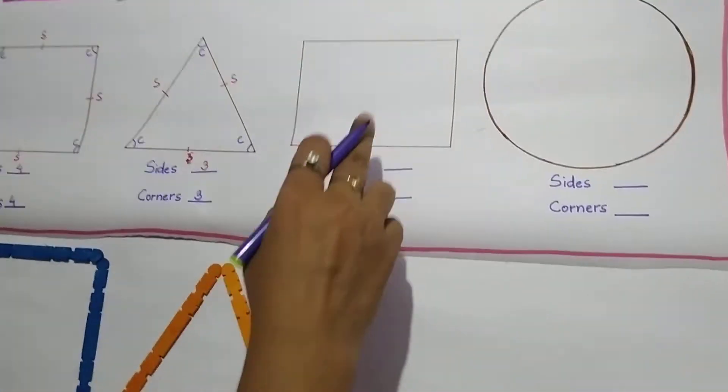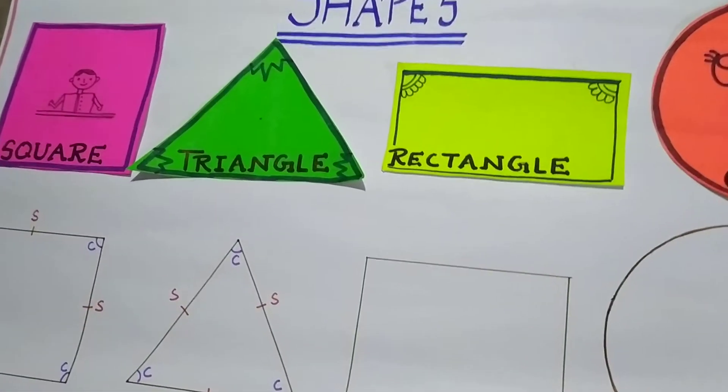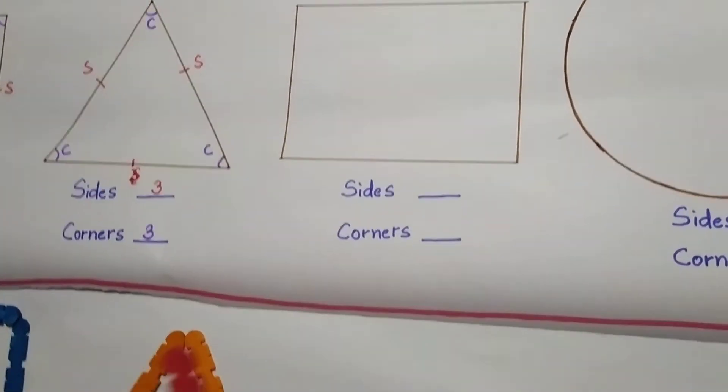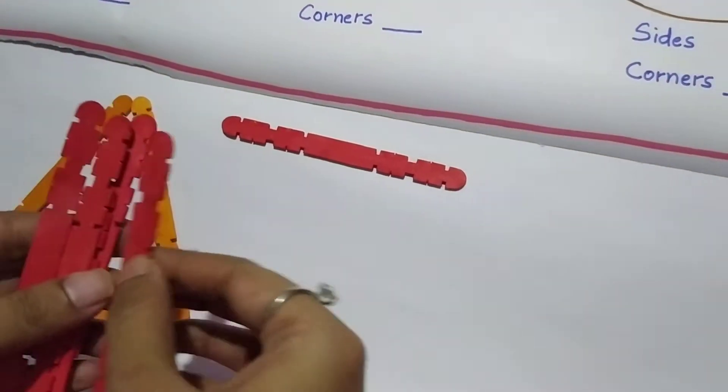Okay? Now let us move to rectangle. In rectangle you know that the opposite sides are equal, right? So how will we make a rectangle? See this.